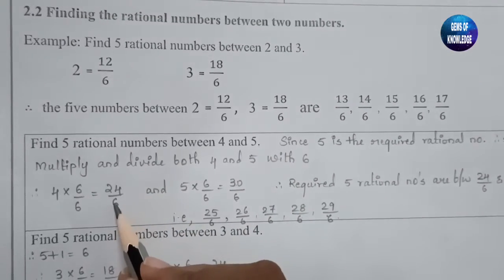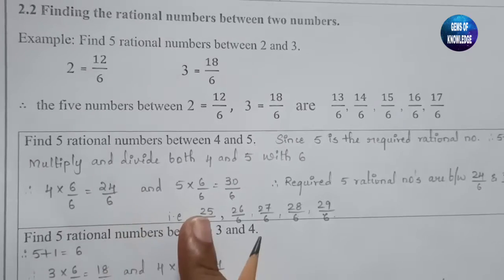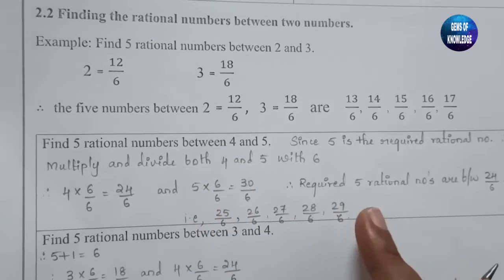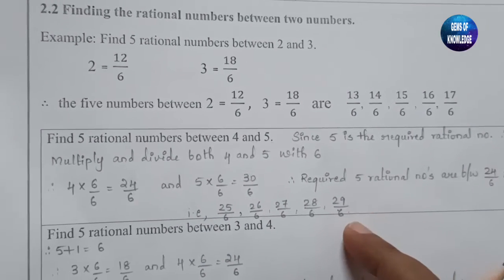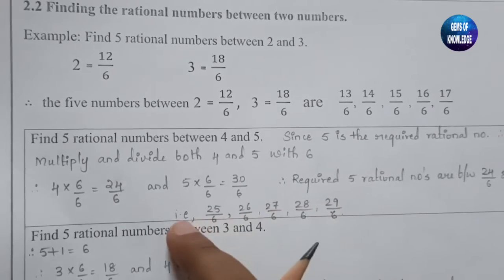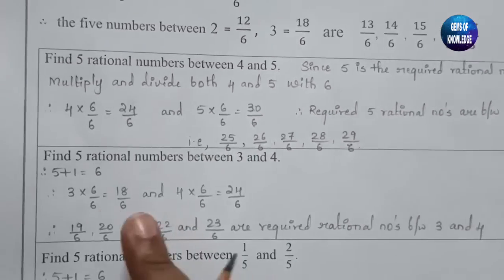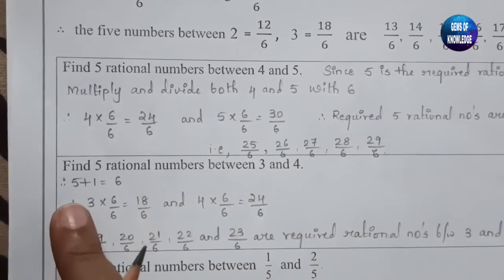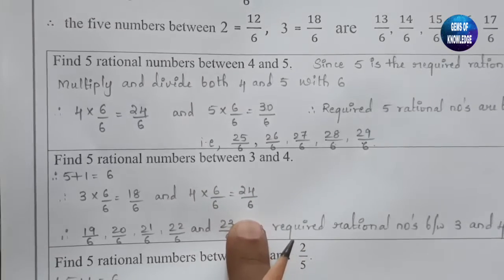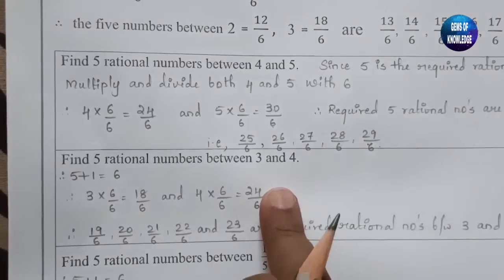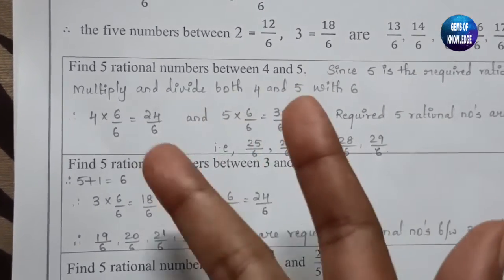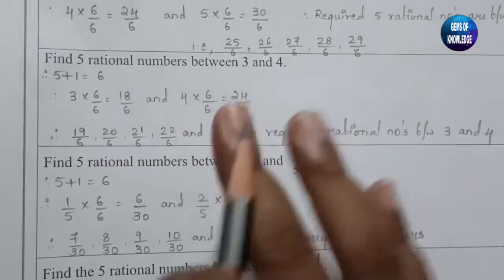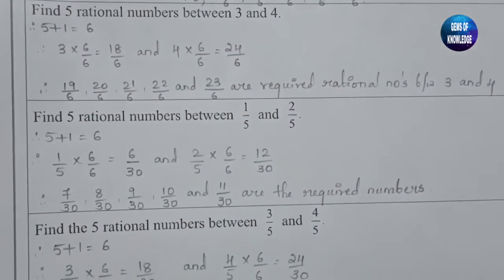To verify: 24 by 6 equals 4 and 30 by 6 equals 5, so the five numbers between them are indeed between 4 and 5. Similarly, to find 5 rational numbers between 3 and 4: take 5 plus 1 equals 6, multiply both numbers by 6 to get 18 by 6 and 24 by 6. The five rational numbers between them are 19 by 6, 20 by 6, 21 by 6, 22 by 6, and 23 by 6.